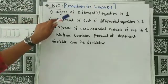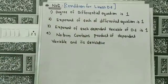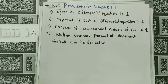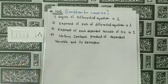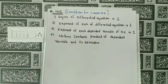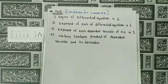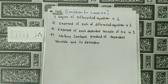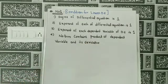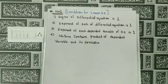The four conditions are: First, the degree of the differential equation is always 1. Second, the exponent of each derivative is 1. Third, the exponent of each dependent variable is 1. Fourth, no term contains the product of the dependent variable and its derivative.